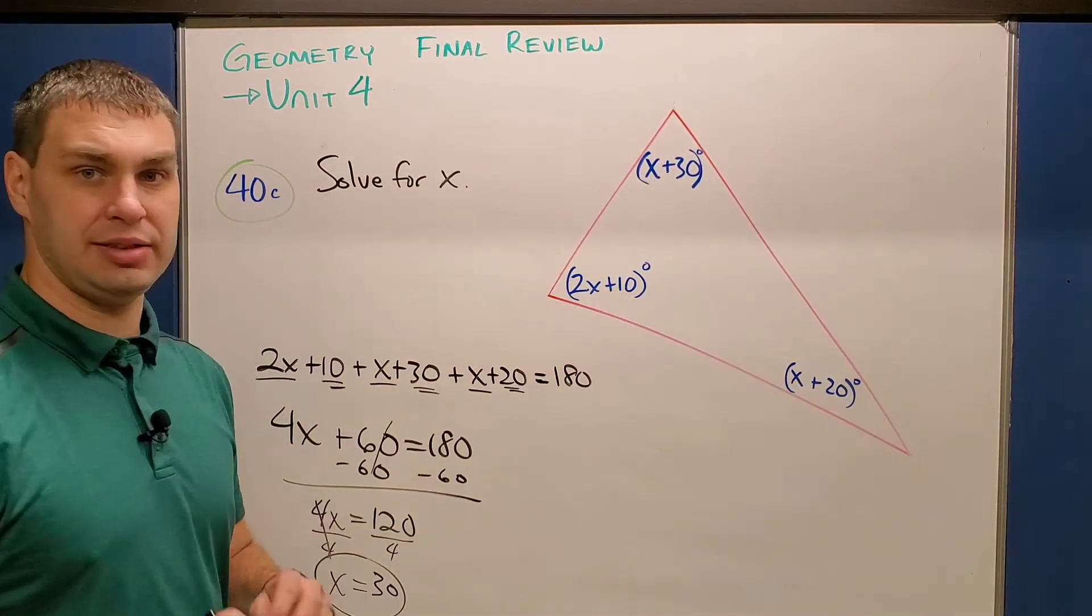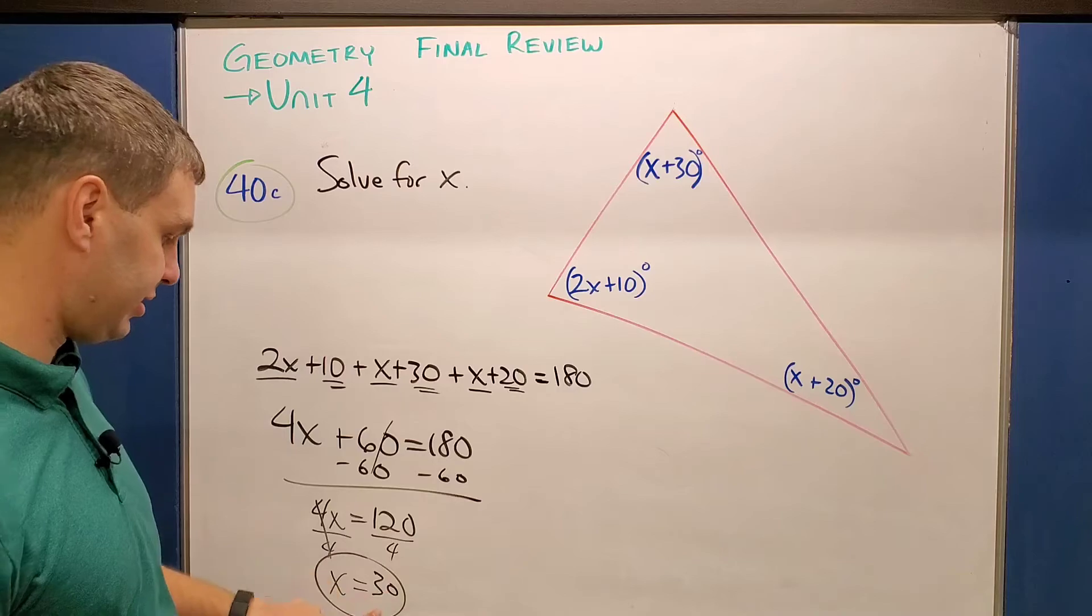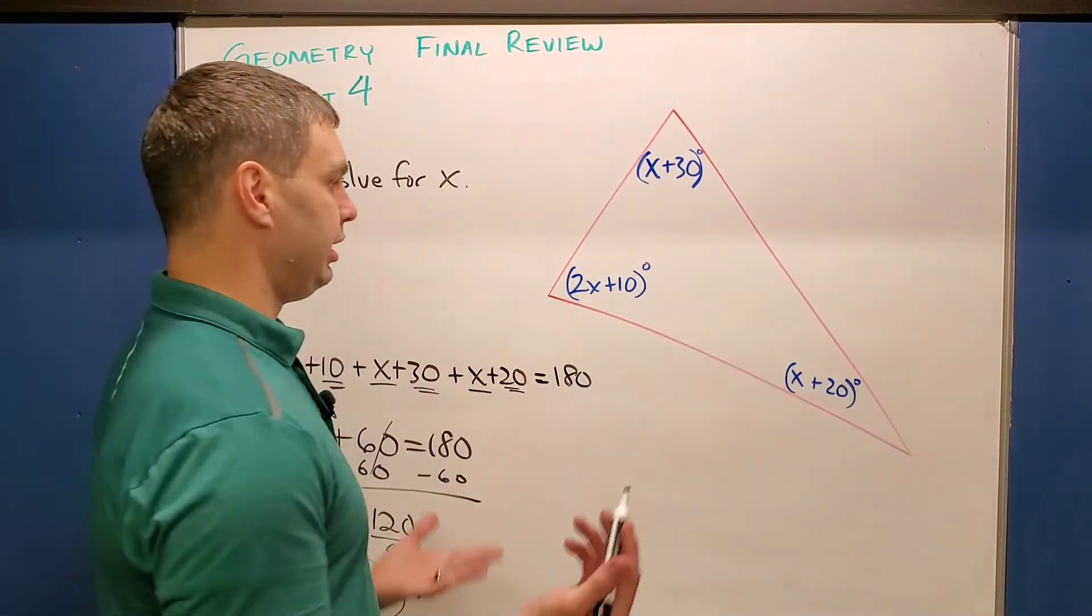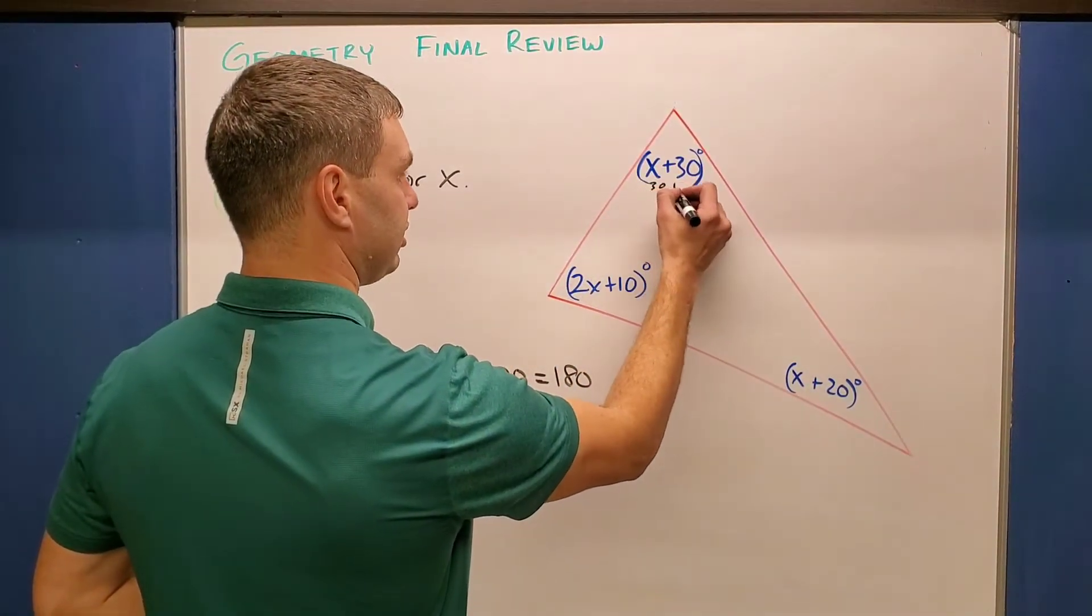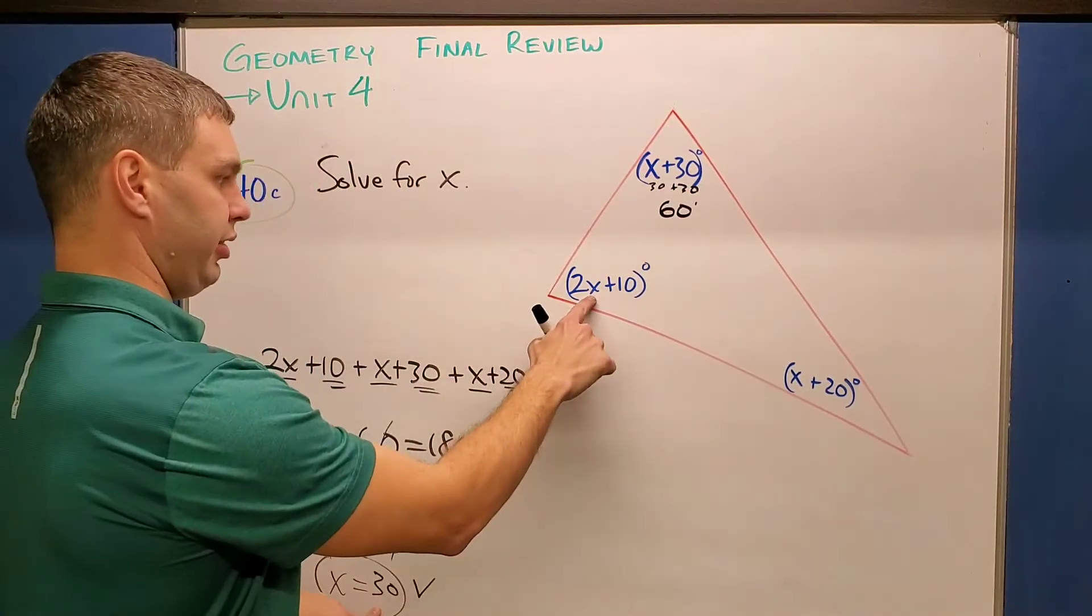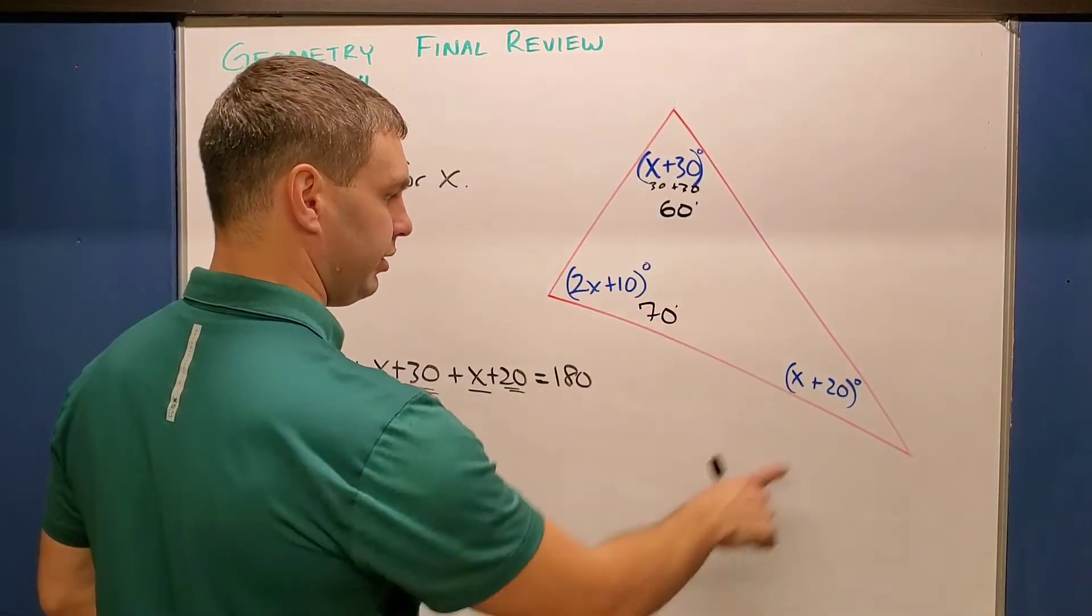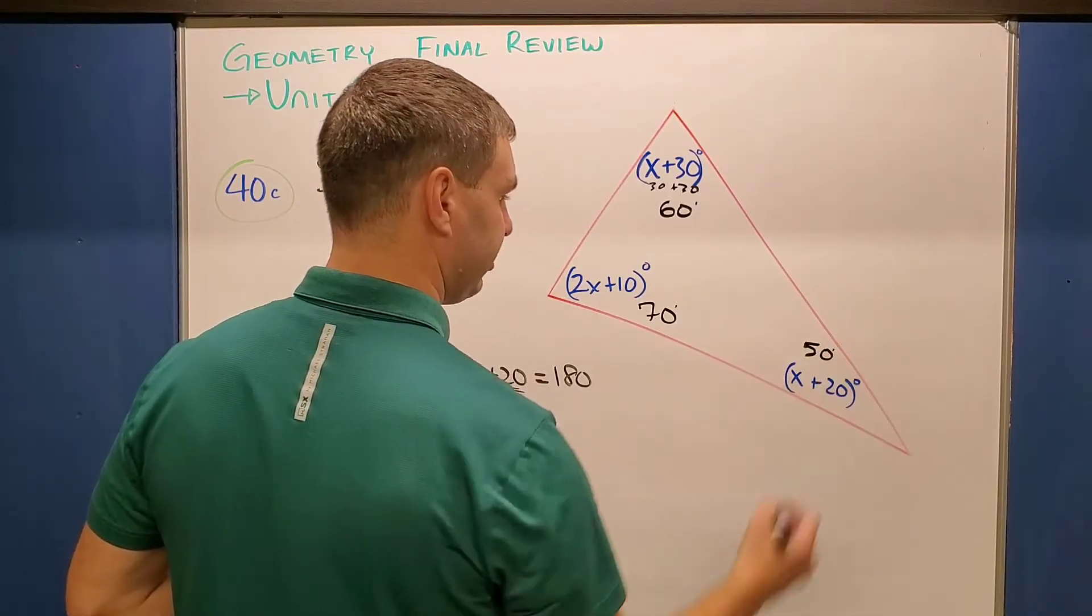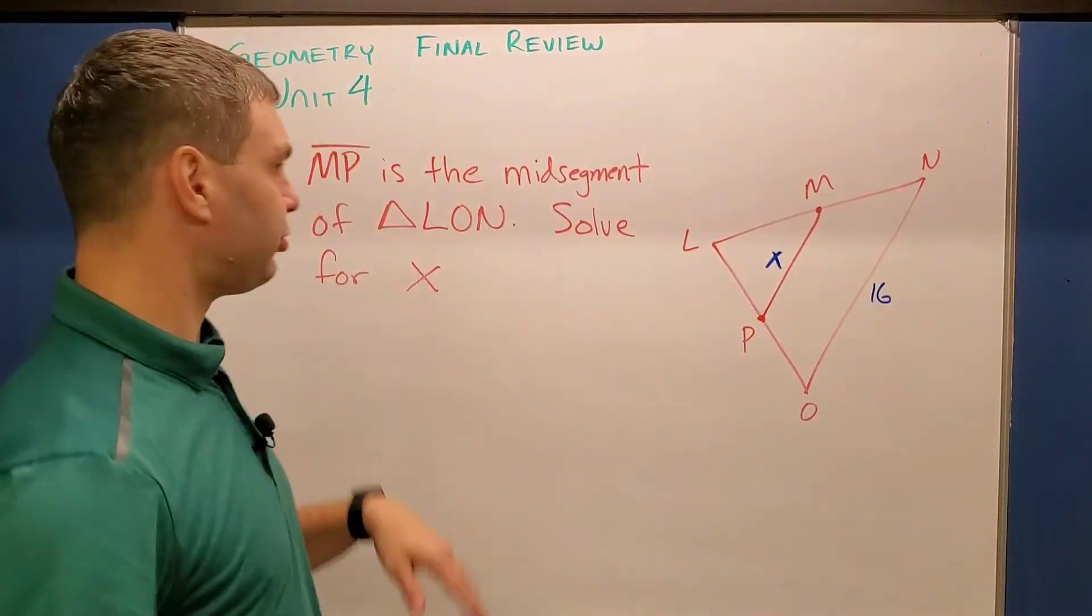And then we could go back and plug those in. In fact, I'm going to do that, but that's all the question is asking for, this is just finding X. So we're kind of done, but maybe your question says to find each angle as well. And in that case, what we would do is plug in 30 for X in this one. 30 plus 30 is 60, so that angle is 60. Over here, 30 times two is 60, 60 plus 10, this one is 70. And then lastly, 30 plus 20 is 50. And then you can clearly see that 50 plus 70 plus 60 also adds up to be 180 degrees.